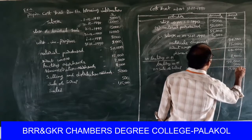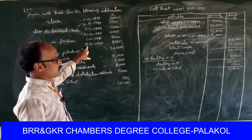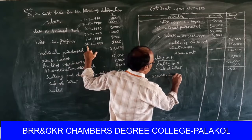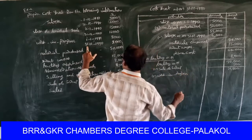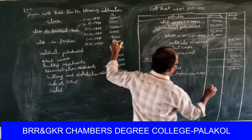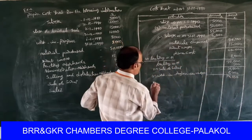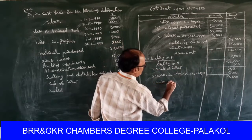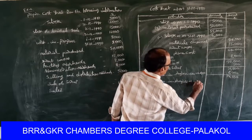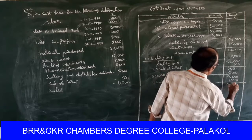So seventy-one thousand five hundred. Next, work in progress opening value is added, and closing value is deducted from the total. Add work in progress as on 1/1/1990: eight thousand rupees. Total is seventy-nine thousand five hundred. Less work in progress as on 31/12/1990: eight thousand rupees. So the result is seventy-one thousand five hundred.